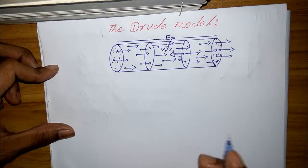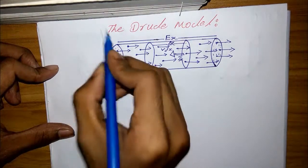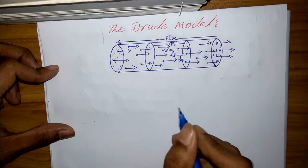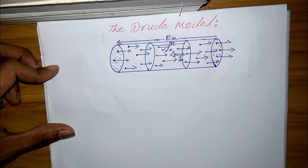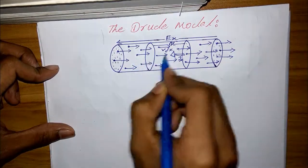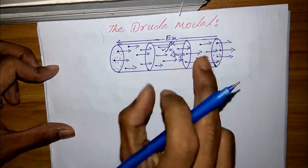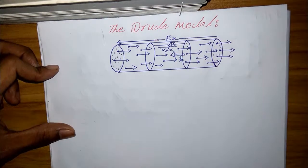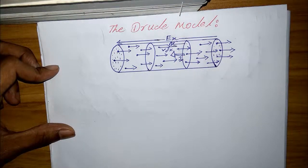Under the influence of external field E_x, the electrons will acquire a net velocity in x direction. Electrons will acquire a net velocity in the del x direction or x direction.